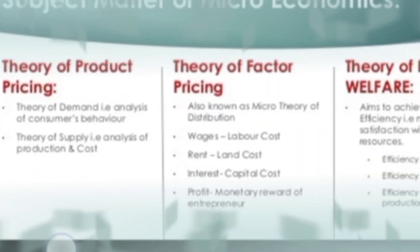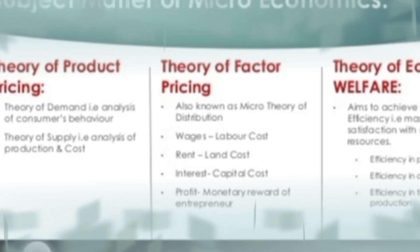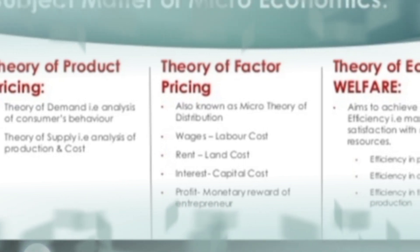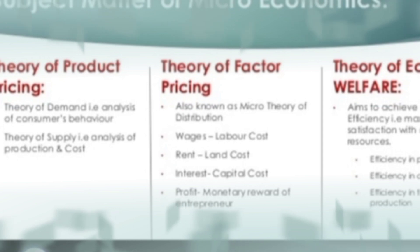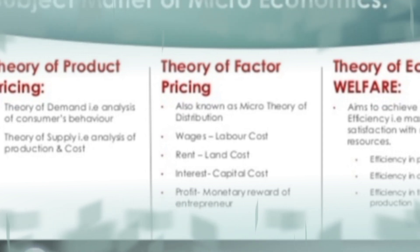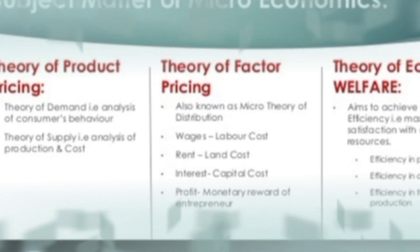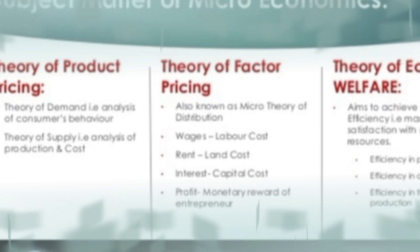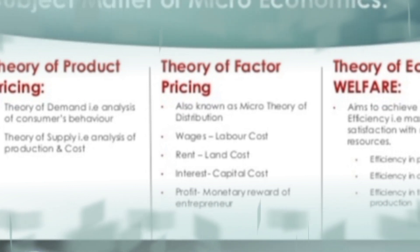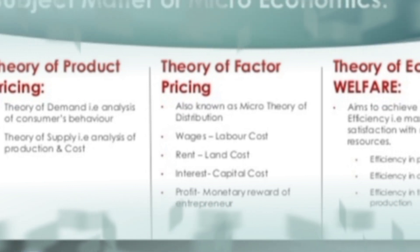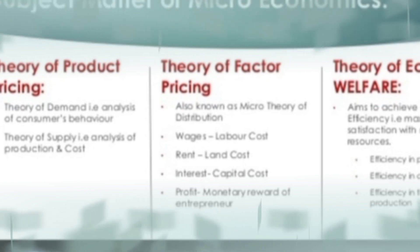The theory of product pricing consists of the theory of demand and the theory of supply — that is, consumer behavior and producer behavior. Demand refers to consumer behavior and supply refers to producer behavior, both coming under product pricing.